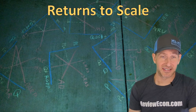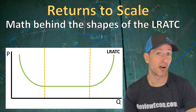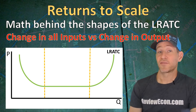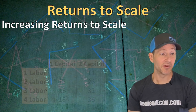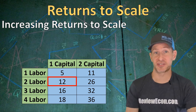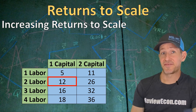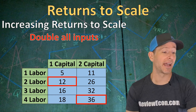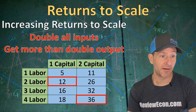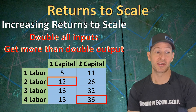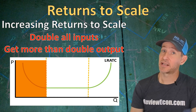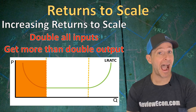Finally, we're going to talk about returns to scale. Returns to scale is essentially the math behind the shape of the long run average total cost curve — we're comparing the changes in all inputs versus changes in outputs. First, let's look at increasing returns to scale. If we assume a firm currently has one unit of capital and two units of labor being used in production, they will have 12 units of output. If this firm doubles all inputs — now two units of capital and four units of labor — they now have 36 units of output. Since we doubled all inputs and got more than double the output, we are increasing our returns as the company scales up production. On the long run average total cost curve, this is the downward sloping portion — because we're getting more output for our inputs, average costs are falling.